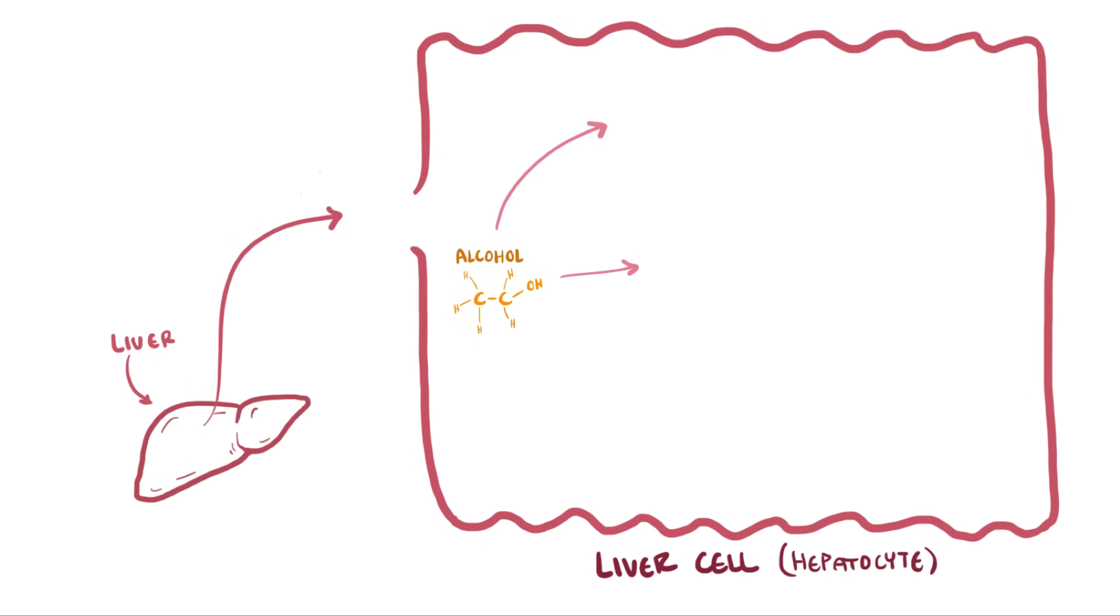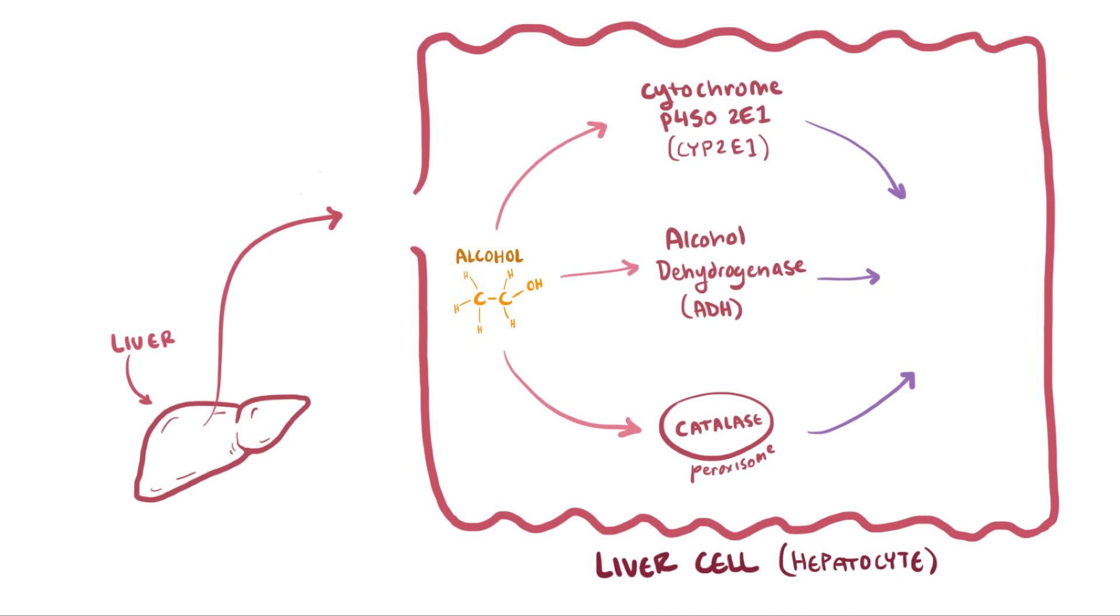One pathway involves an enzyme called alcohol dehydrogenase, or simply ADH, and this happens in the cytosol of the cell. Another involves catalase inside organelles called peroxisomes, and a third involves being converted by the enzyme cytochrome P4502E1, sometimes just shortened to CYP2E1. All three of these pathways lead to the conversion of alcohol to acetaldehyde.